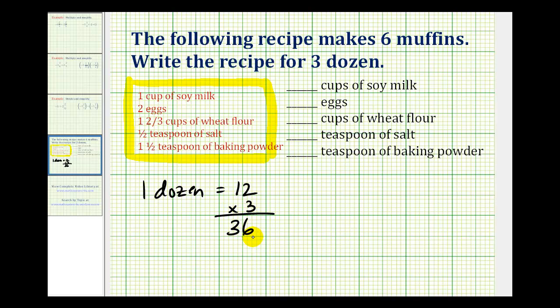We need a total of 36 muffins, and this recipe is only for six muffins. Since six times six is equal to 36, we'll have to take all of these quantities here and multiply by six to determine the new recipe.